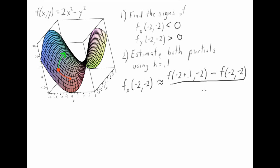And finally, just like a difference quotient in calculus, we want to divide by the change in x. So what I have here is f(-1.9, -2) minus f(-2, -2), all over 0.1.